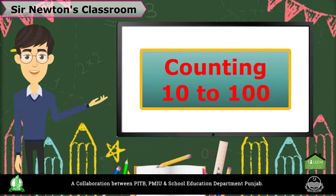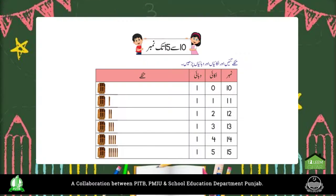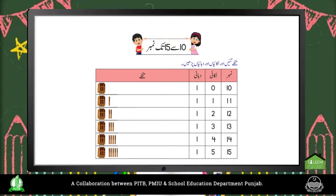Children, now we will also read from your book — numbers 10 to 15. Children, you can see here that the numbers have columns for ones (Ikaayi/Ones), tens (Dahaayi/Tens), and sticks (Tinke). You can see that one bundle of sticks equals ten sticks, i.e., one bundle equals the number 10, which has zero ones and one ten.